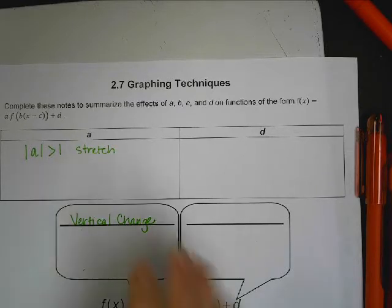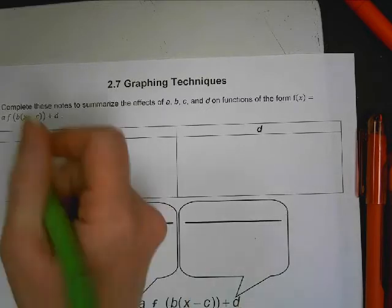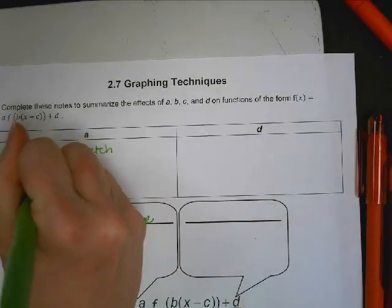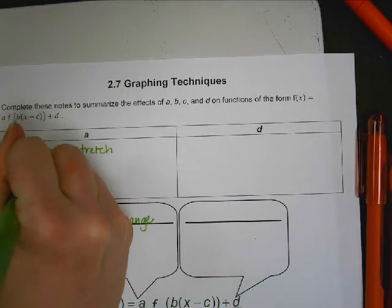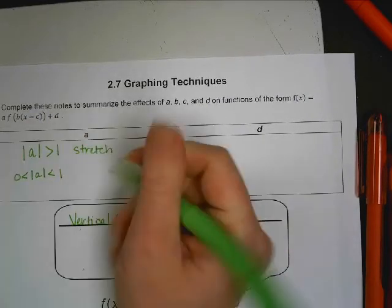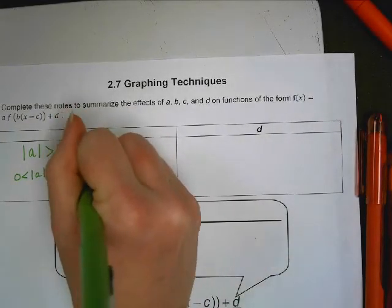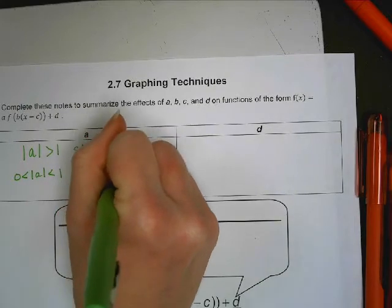In order to be a compression or a shrink, the absolute value of A is between zero and one, meaning it's a fraction or a decimal less than one.